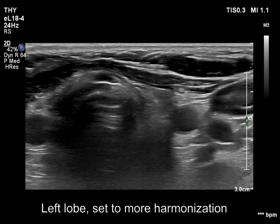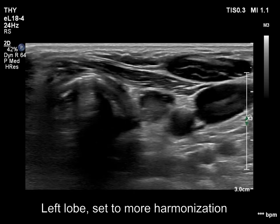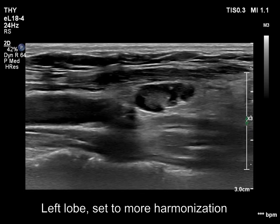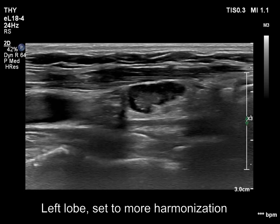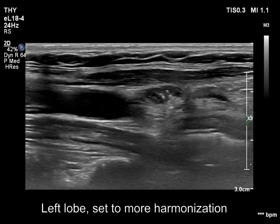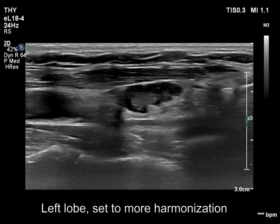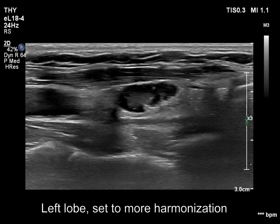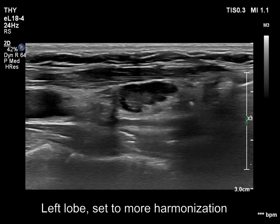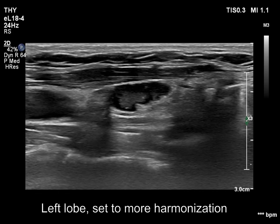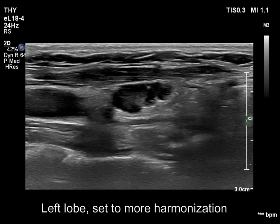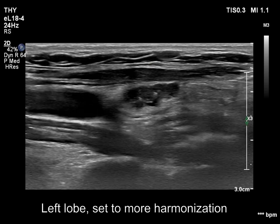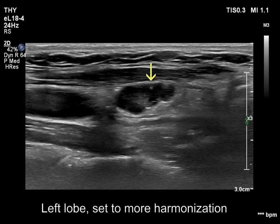The situation is completely different with using better harmonization. Around half of the node seems to be deceptively cystic. The setting has a crucial role. With better harmonization, the deeply hypoechoic parts deceptively look like cystic areas. Therefore, punctate echogenic granules within these areas could be misinterpreted as comet-tail artifacts.